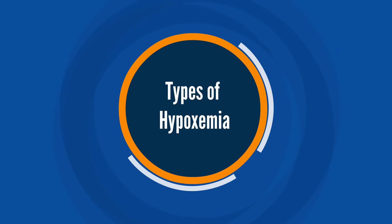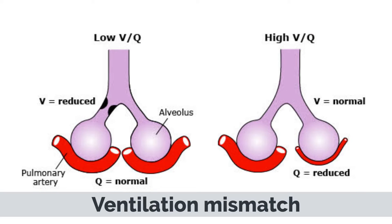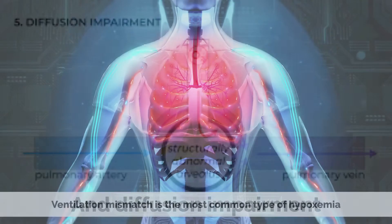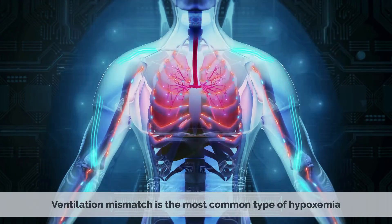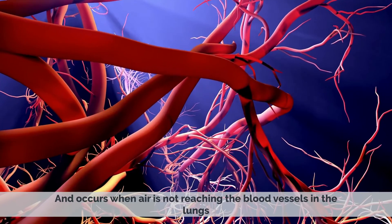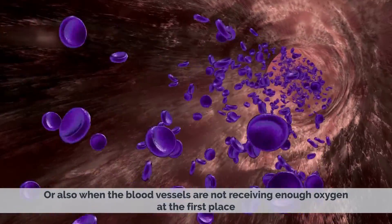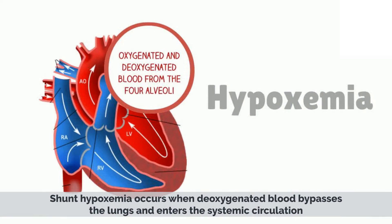There are several types of hypoxemia, including ventilation mismatch, shunt, and diffusion impairment. Ventilation mismatch is the most common type and occurs when air is not reaching the blood vessels in the lungs, or when the blood vessels are not receiving enough oxygen. Shunt hypoxemia occurs when deoxygenated blood bypasses the lungs and enters the systemic circulation.